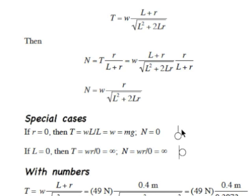What if the cord length L equals zero? Then we have R over zero in both expressions, giving infinite tension and infinite normal force. This is essentially riveting the ball directly to the wall. There's no component of force in the vertical direction to support the ball's weight, so the system tries to make the tension infinite — which is not a realistic physical situation.